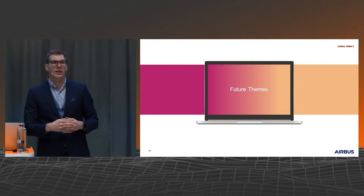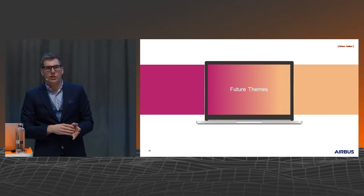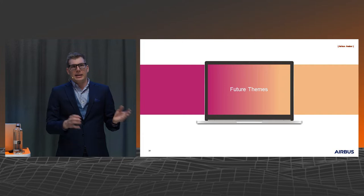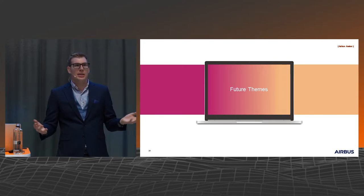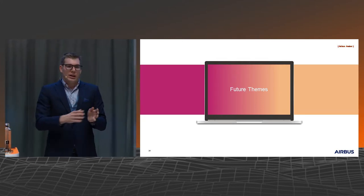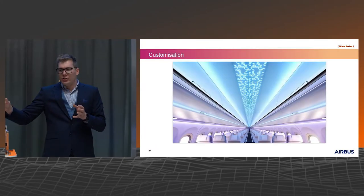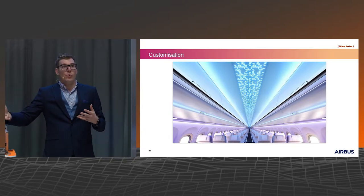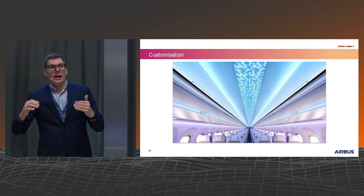Turning to the future: our customers are asking us for more customisation. When we make an aircraft, a lot of people think it's a bit like making a car — where Ford or Toyota might make 10 million cars a year — but Airbus makes somewhere north of 500 aircraft a year. The challenge for us is that all of each aircraft is special in its own way. When a customer orders an aircraft, they want it made to their specifications with their options.